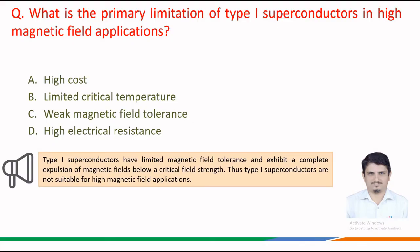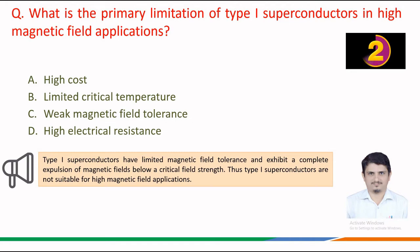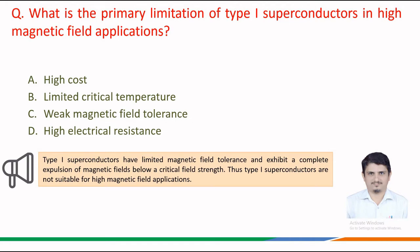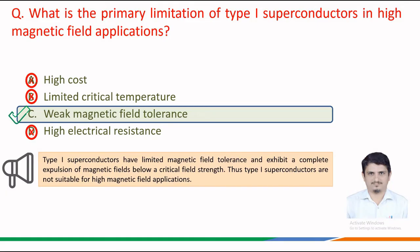Type 1 superconductors have limited magnetic field tolerance and exhibit a complete expulsion of magnetic fields below a critical field strength. Thus, type 1 superconductors are not suitable for high magnetic field applications. Therefore, the correct answer is option c — weak magnetic field tolerance.